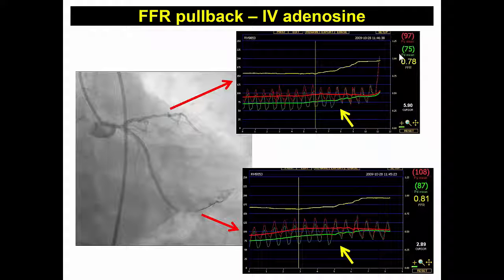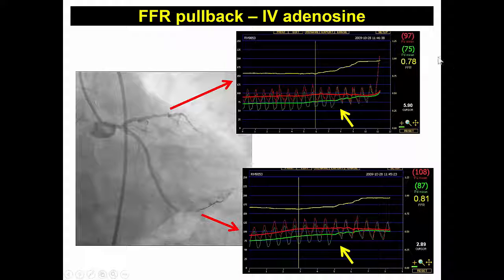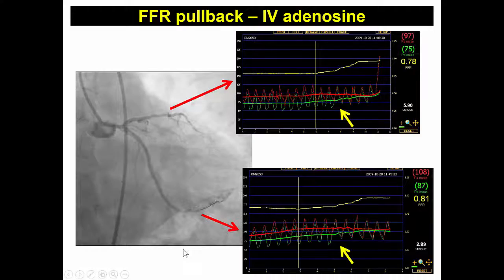We proceeded to confirm that by performing fractional flow reserve. To assess the left main, we needed to do fractional flow reserve both in the LAD as well as the circumflex. And indeed, the FFR on the LAD was 0.78 and the FFR on the circumflex was 0.1, with a step-up right at the left main.